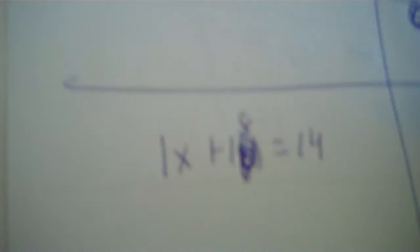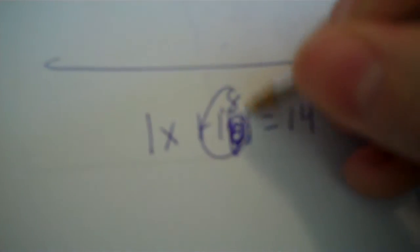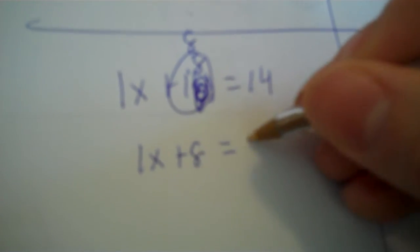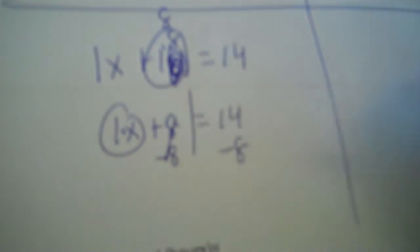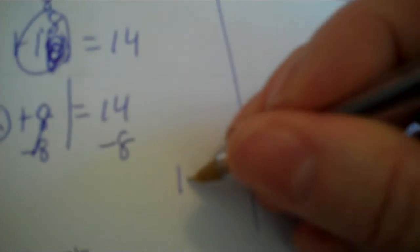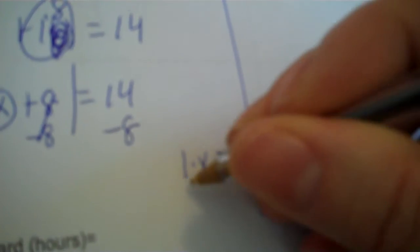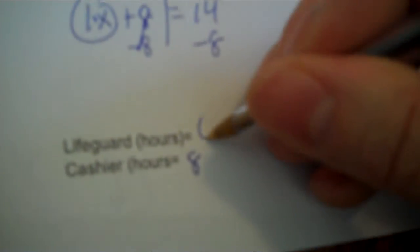That's cashier. Now you can get that the quick way or you can just use your first equation. 8 goes in for Y. 1 times 8 is 8. So it will be 1X plus 8 equals 14. Minus 8, minus 8 is 6.